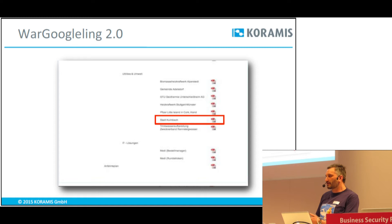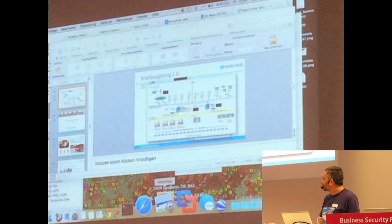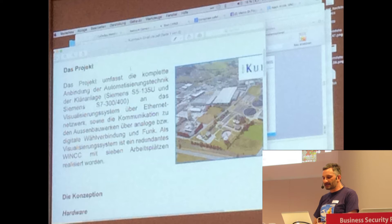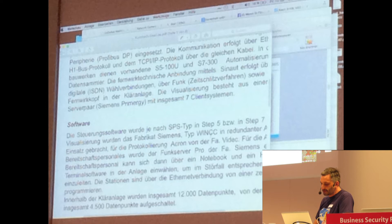Kläranlagen sind in kommunaler Hoheit, also eine kritische Infrastruktur, und oft macht das irgendjemand in der Kommune. Ich habe einfach die Firma herausgesucht, und bei der Firma gab es Referenzen. Innerhalb der Referenzen gab es dann den Bereich Utilities und Umwelt, und bin relativ schnell auf die Stadt Kulmbach gestoßen. Im Referenzdokument finden Sie alles, was ein Angreifer braucht: das System, welche PLCs verwendet werden, dass es eine digitale Wählverbindung und eine Funkverbindung gibt, dass es eine WinCC-Visualisierung ist, und dass die SPS die Typen Step 5 und Step 7 fahren.